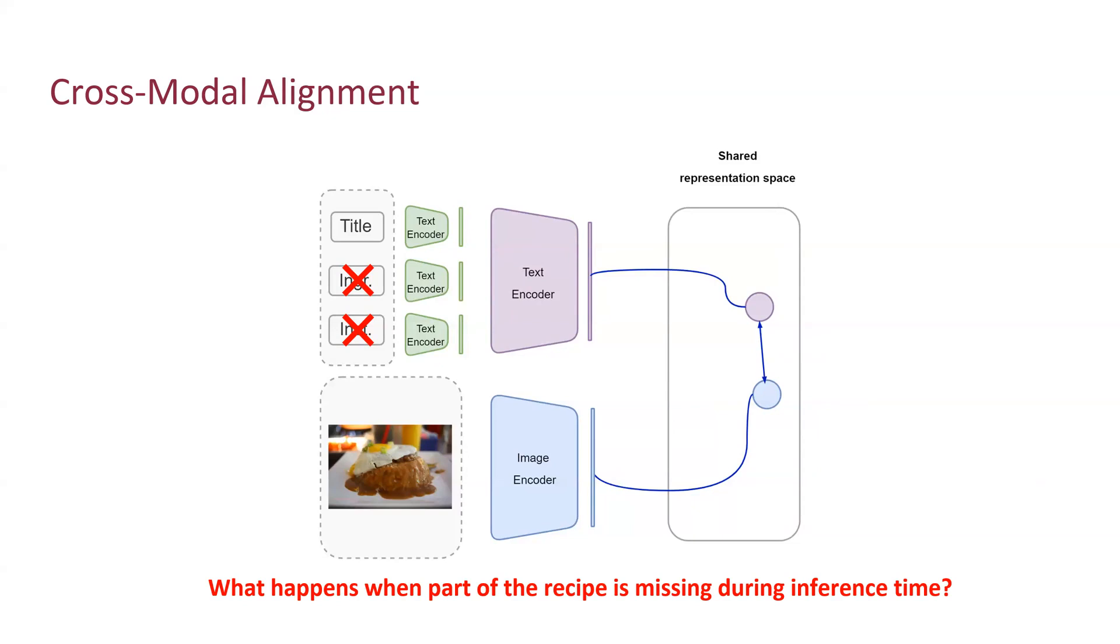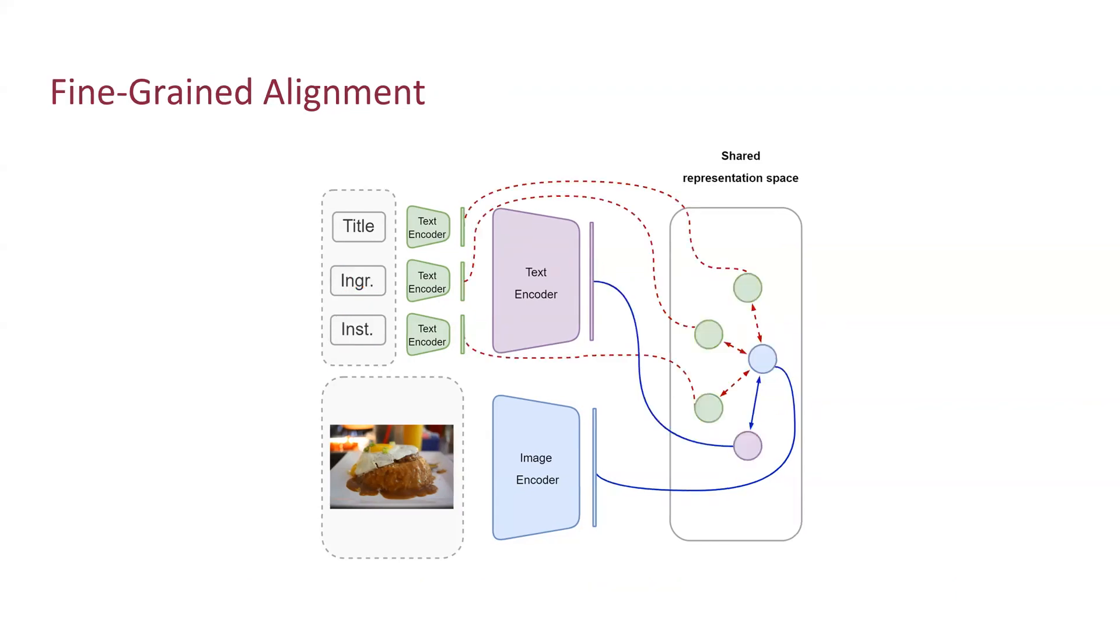But in many cases, some components might be missing. For example, it could also be useful to retrieve recipes using only the title or a set of similar ingredients. Motivated by this, we propose a fine-grained alignment approach where we directly align the title, ingredients, and instructions with the image.